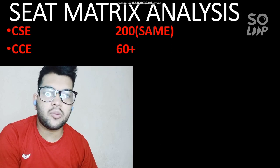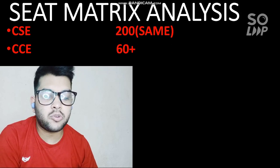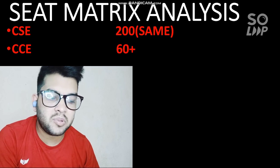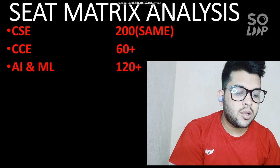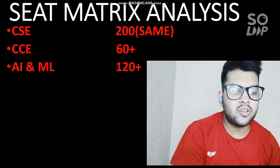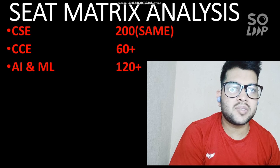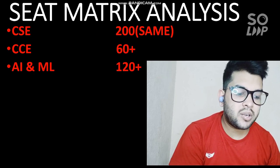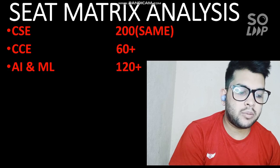You can expect there will be an effect on the cutoff for the CC branch. AIML has 120 seats — it is a new branch added in the main campus. For the Jaipur campus I will talk about it later, but in the main campus it has only 120 seats available.